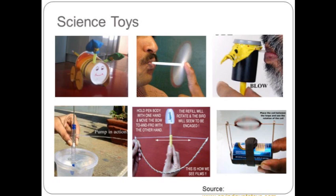Similarly, there are various other toys working on different science principles: the straw spinner, the musical balloon made from a plastic box, a water pump made from a used-up pen, a toy of persistence of vision, a simple DC motor, etc. Children choose and work independently on these activities by referring to books and other sources, casually putting in their own ideas and making new models.